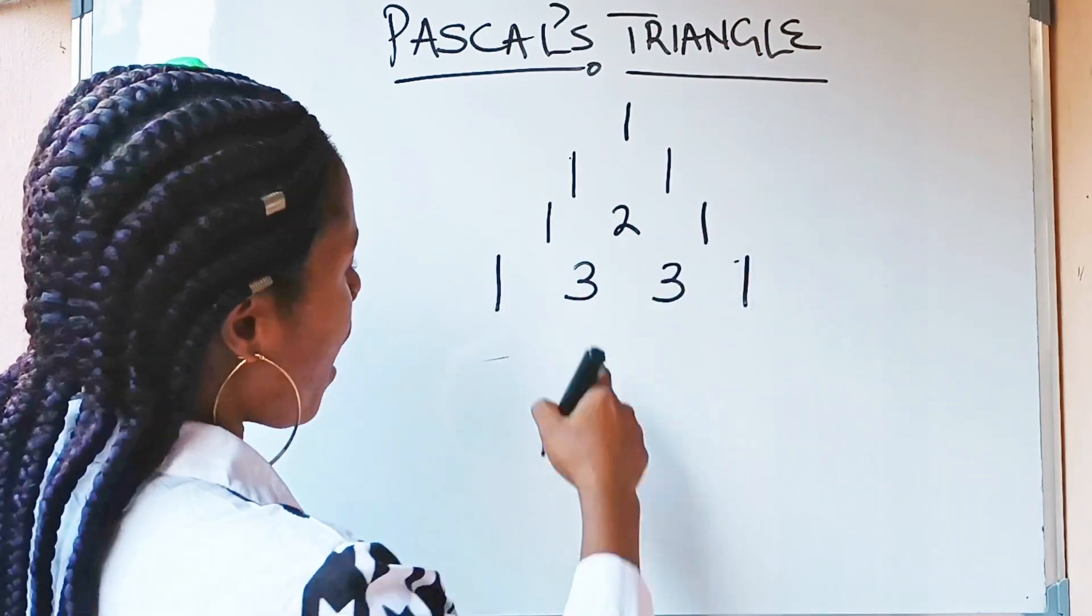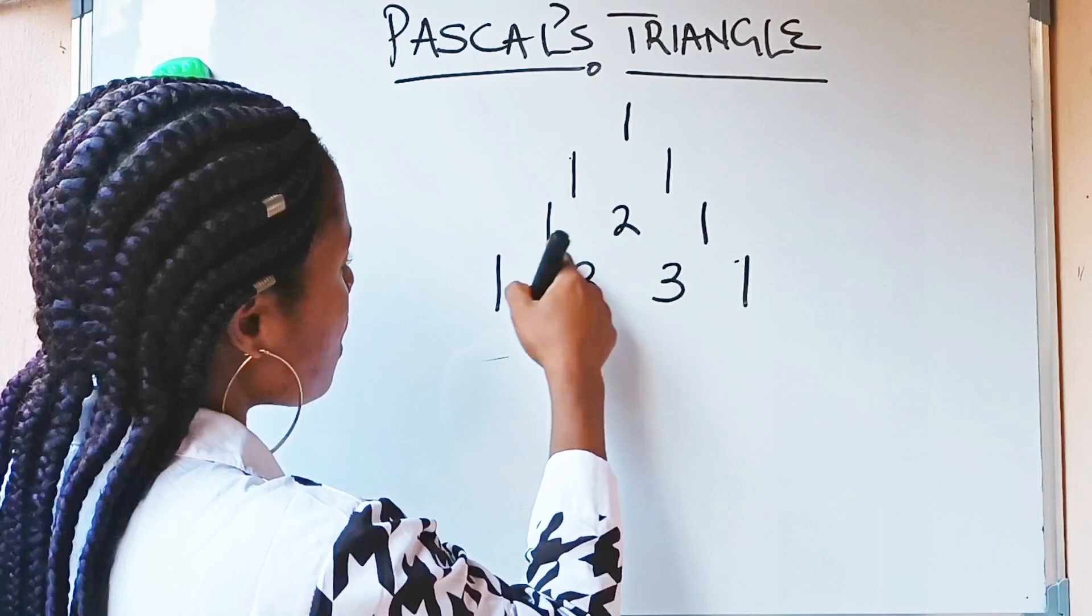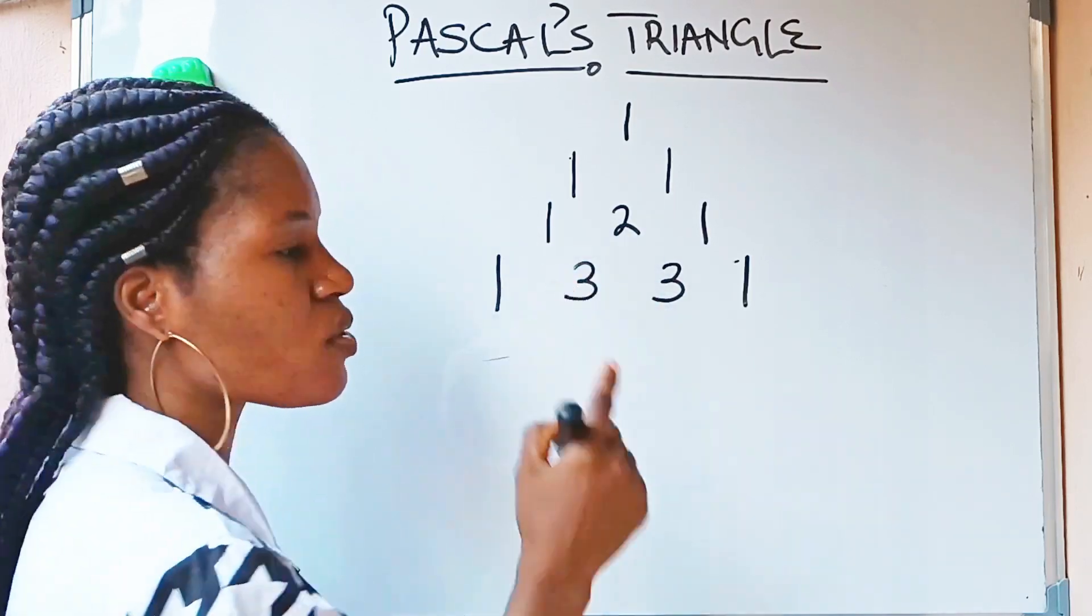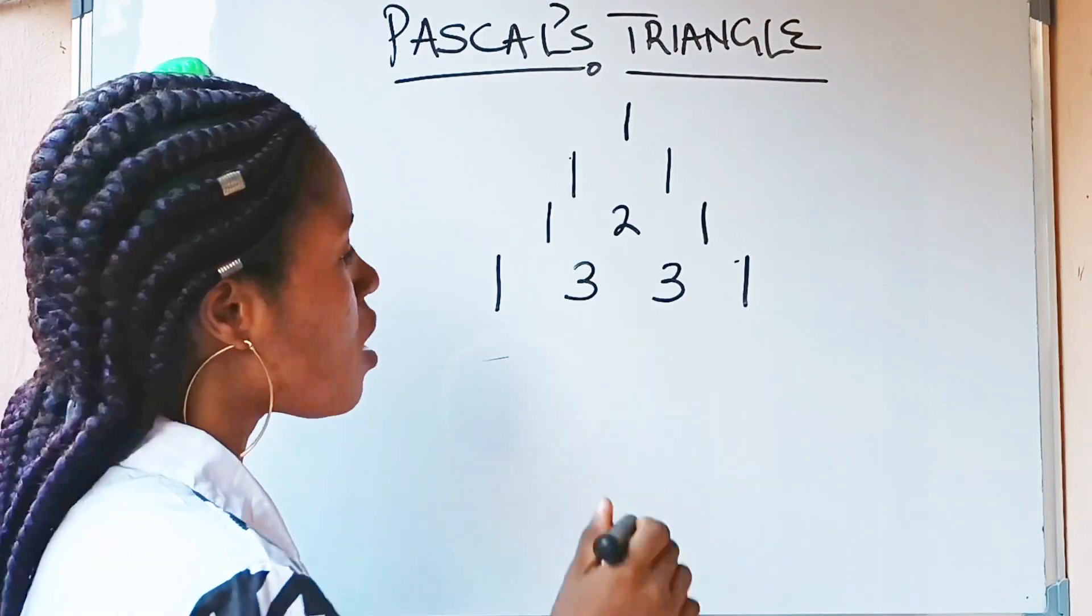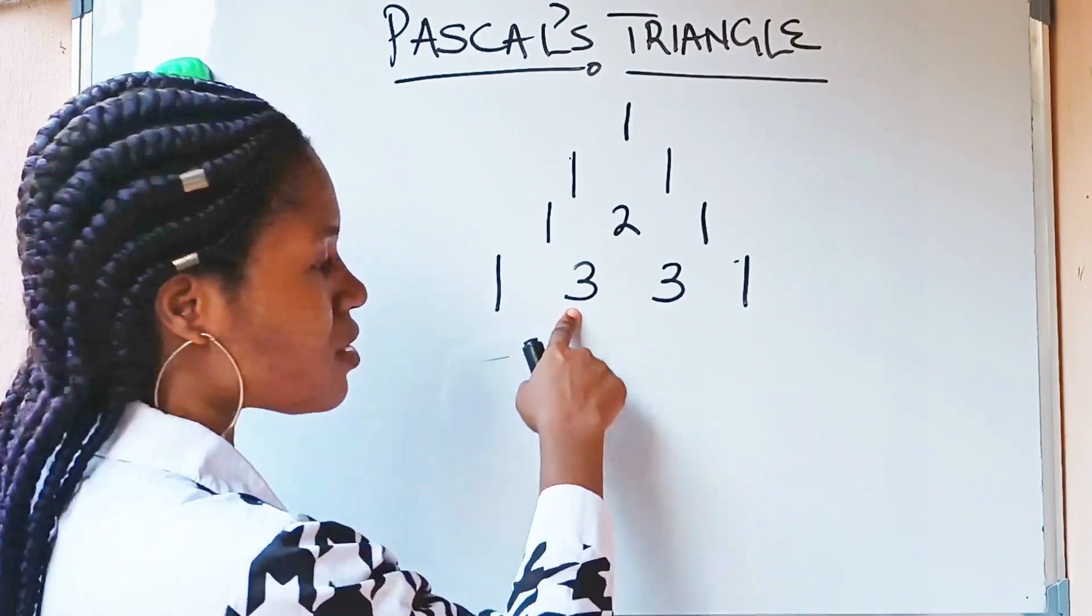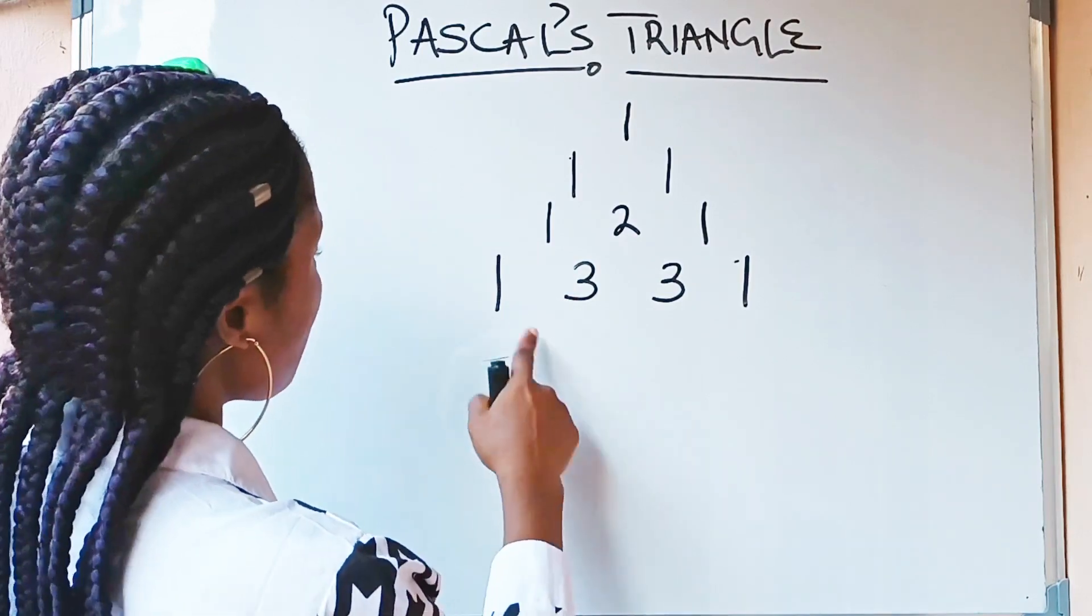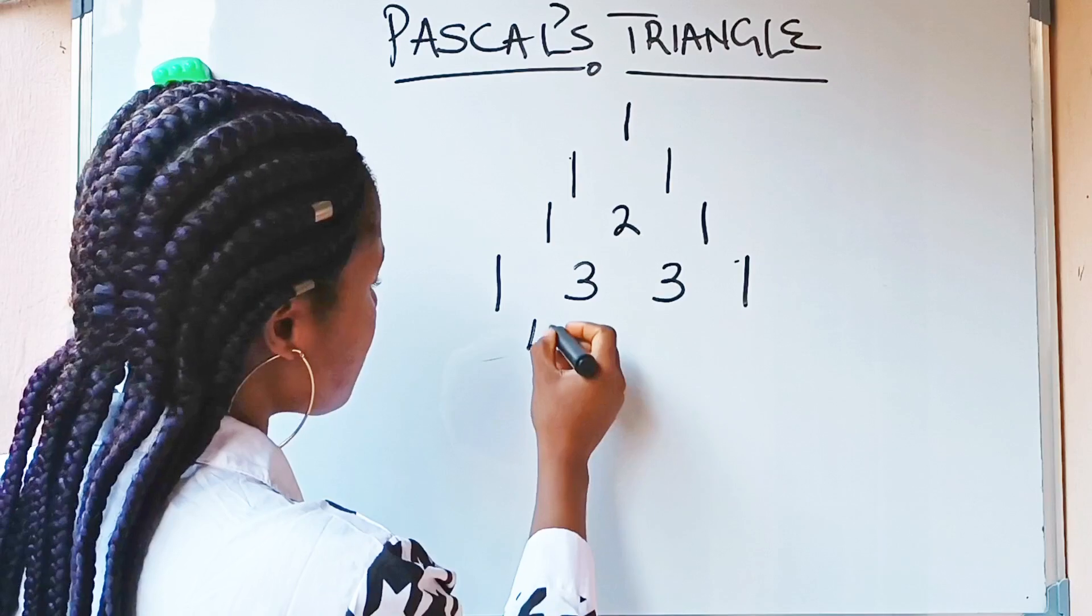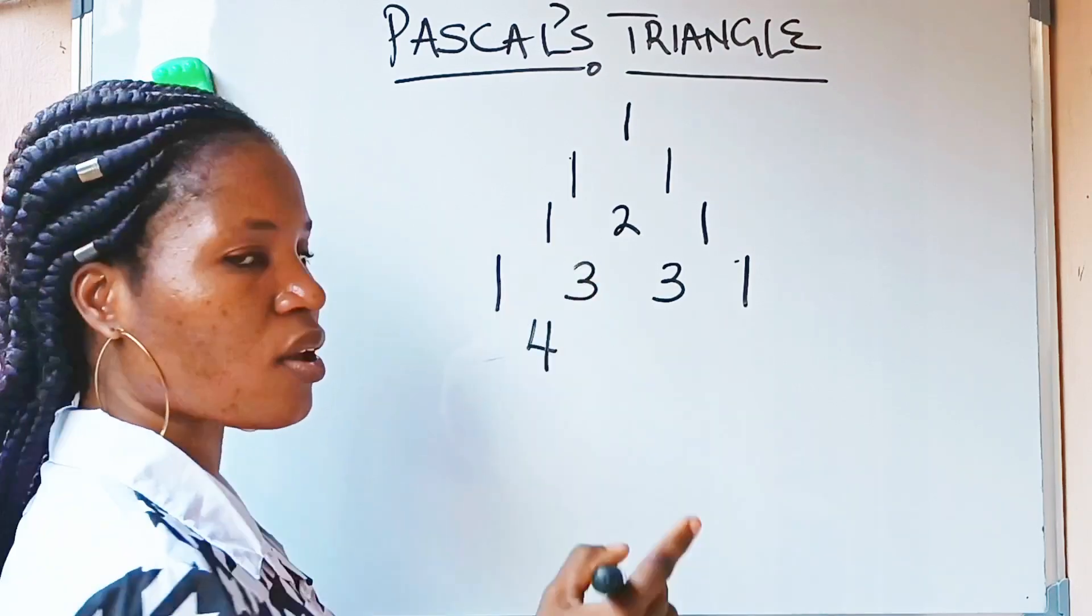Note where I am putting the 3. I write this 3 under this place. I added 1 and 2. So, under this 1 and 2, that is where I wrote it, in the middle of the 1 and 2. In the middle of the 2 numbers that you added together. That is where you are going to write the sum that you got. For this one, I am going to add 1 and 3 together to get 4. So, I am going to write this 4 between 1 and 3.